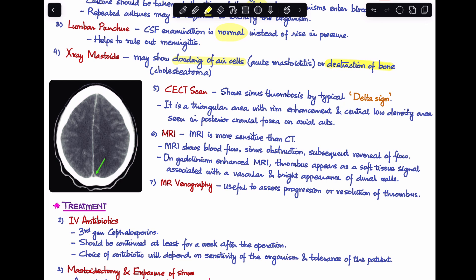A contrast-enhanced CT scan is an important investigation. A typical finding is the delta sign: a triangular area with rim enhancement and central low density, seen in the posterior cranial fossa on axial cuts.